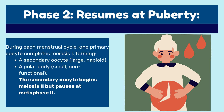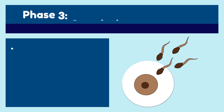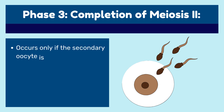Phase two resumes at puberty. During each menstrual cycle, one primary oocyte completes meiosis one, forming a secondary oocyte — large and haploid — and a polar body, which is small and non-functional. The secondary oocyte then begins meiosis two but pauses at metaphase two.